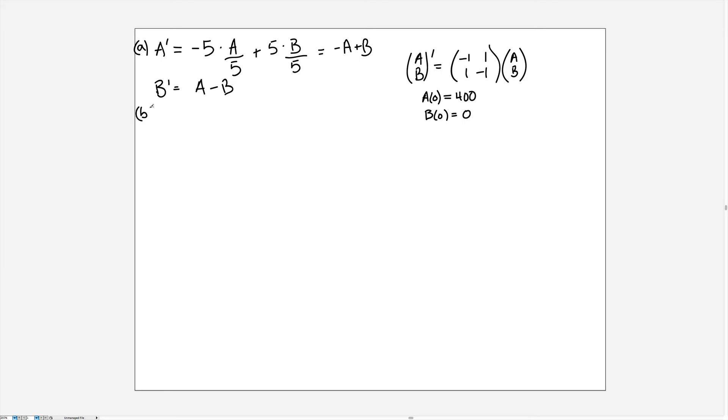For part b you were then asked to solve this initial value problem. You should find the eigenvalues to be lambda equals zero and minus two, and the eigenvector associated with lambda equals zero is v equal (1, 1) and the eigenvalue minus two has eigenvector (1, -1).